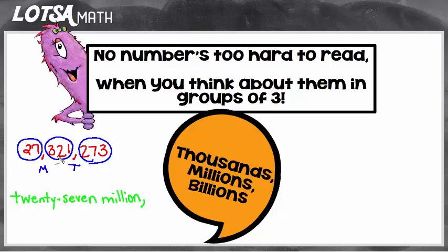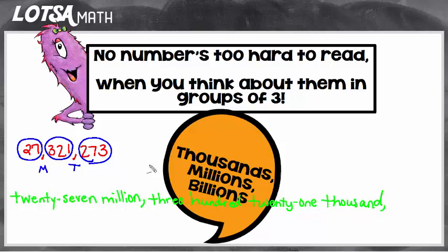Now this period is 321,000. So then I would write the words: three hundred twenty one. And now the comma word: thousand. I'm going to put a comma just to separate my last period. And now this period is 273, so I'm just going to write that in words: two hundred seventy three.